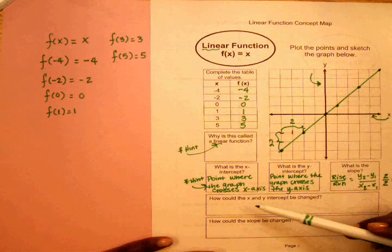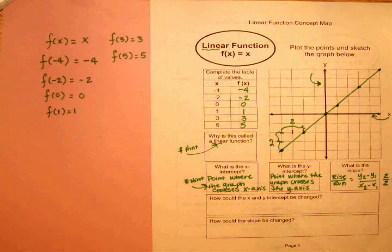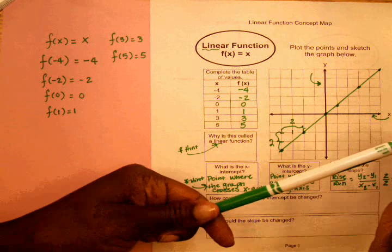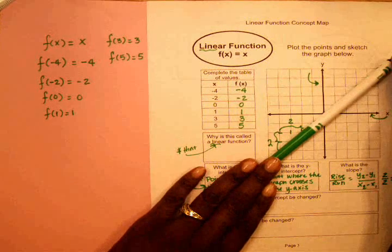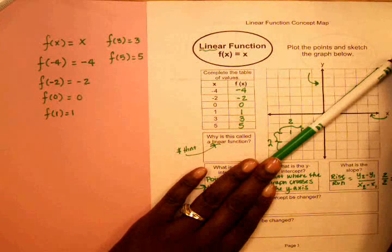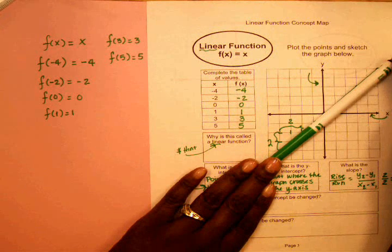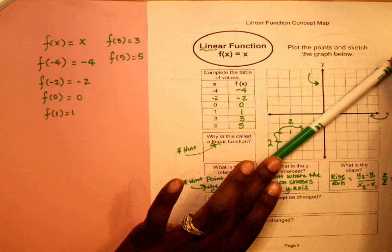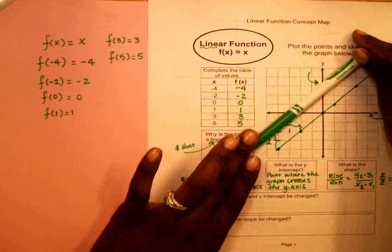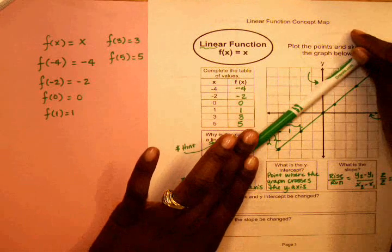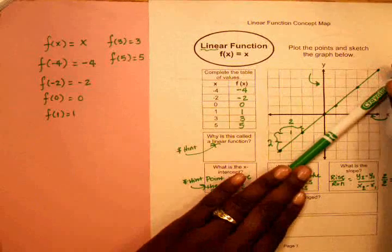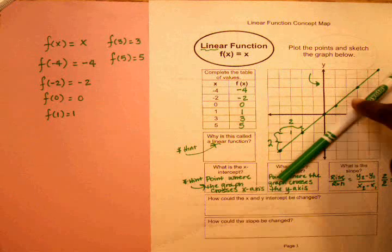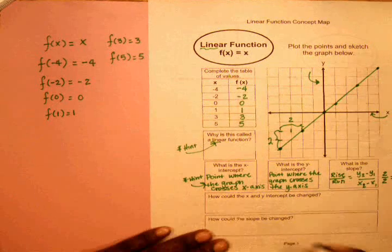Now, the hint to answer the last two questions: how could the x and y-intercept be changed? Well, let's say this marker is my line. And we know that the x and y-intercept is where the graph crosses the x-axis or the y-axis. So we can simply roll our marker and create a new line. We can shift the line up or we can shift it down. It's up to you where you want to make your line if you want to change it.